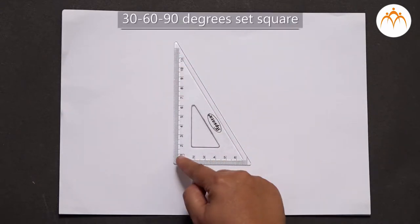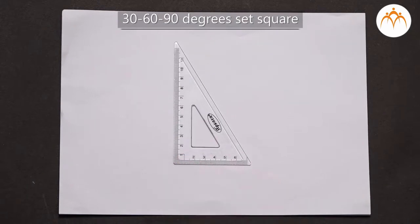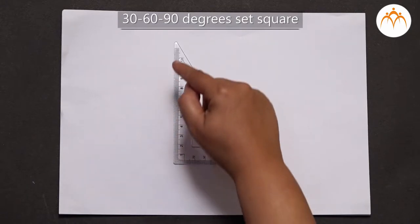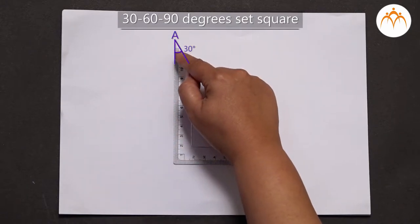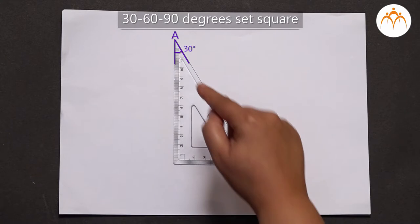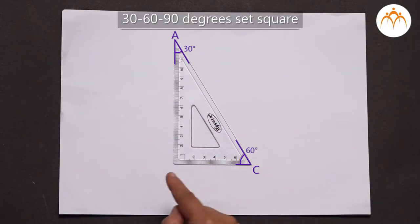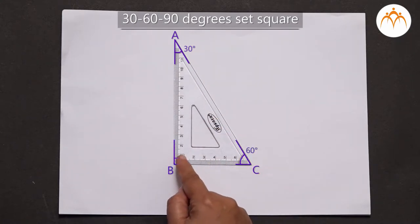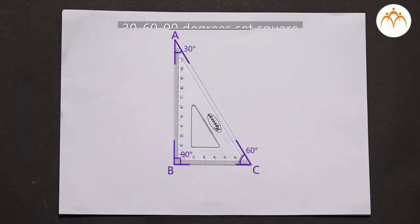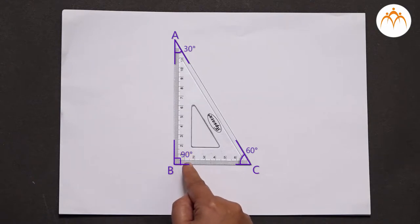We call this set square a 30-60-90 degrees set square because it has this angle equal to 30 degrees, this angle equal to 60 degrees, and this angle equal to 90 degrees. As this angle is equal to 90 degrees,